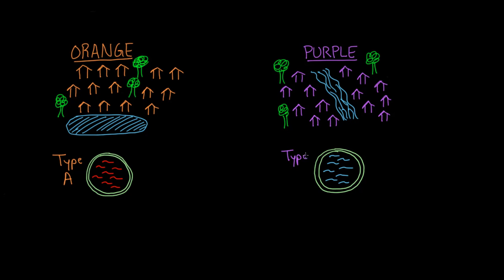Now there are many different types of type A affecting the orange community, and what's drawn is just the dominant strain. There may be a handful of type A's affecting the orange people, but this is the dominant strain. The same is true in the purple community — they have a few different type B's circulating, but the dominant strain is the one shown.